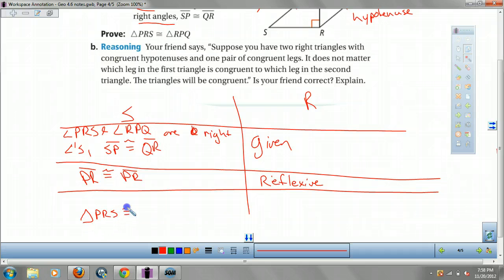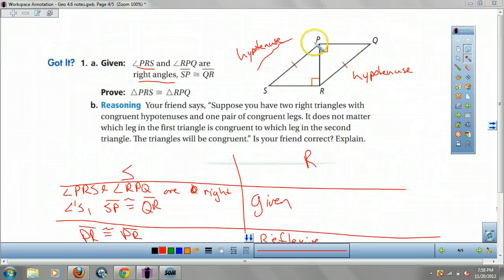what do I know about my two triangles? That's right. PRS is congruent to RPQ. By the hypotenuse leg theorem. Again, HL stands for hypotenuse leg, guys. Hypotenuse and a leg. Hypotenuse leg.